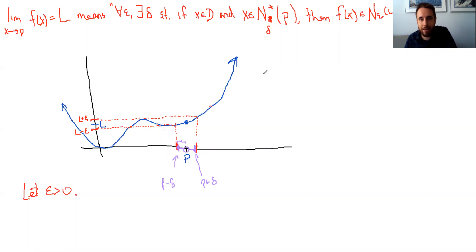And then anything in this range, anything in this range here, excluding the point P because of the deleted neighborhood, will definitely get mapped up to something that is within this epsilon neighborhood. And we can play the same game for every epsilon.